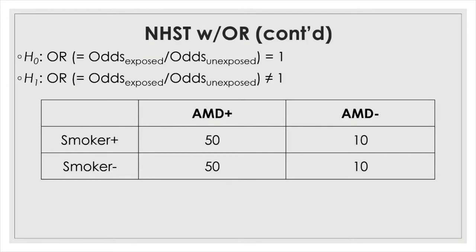For example, AMD+ means you have AMD and AMD− means you don't, and the exposure here is smoking: smoker-positive means you are a smoker and smoker-negative means you are not. Typically, smoking is thought to be a risk factor for AMD. But hypothetically, if the odds of having AMD for a smoker is 5, and the odds of having the same disease for a non-smoker is also 5, then there's no difference in the odds — smoking is not a risk factor for AMD.